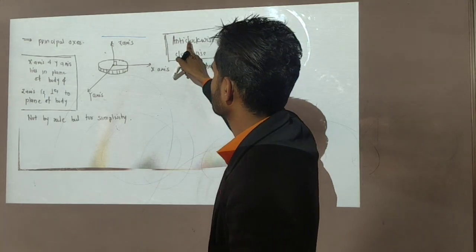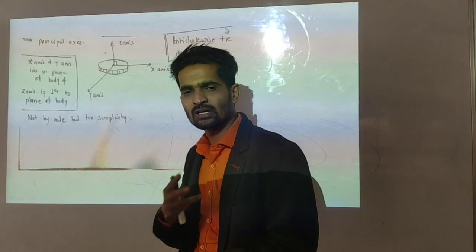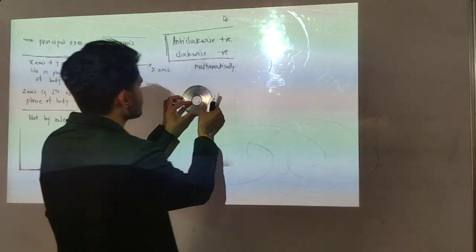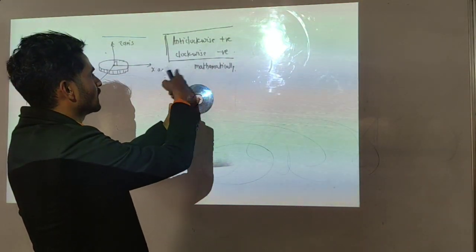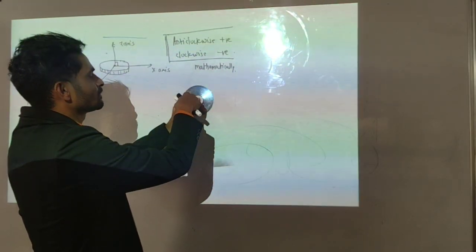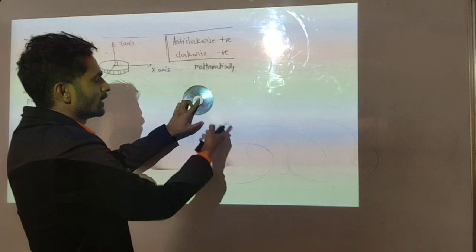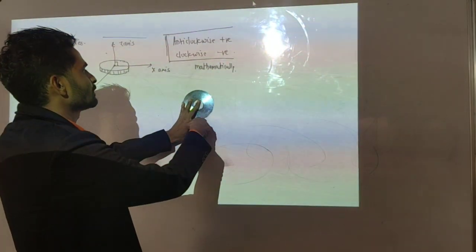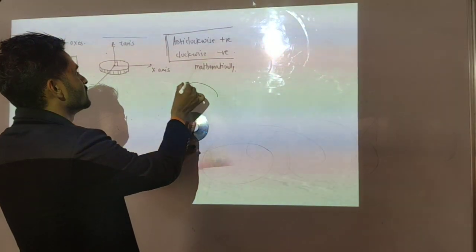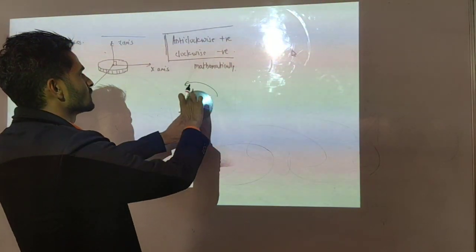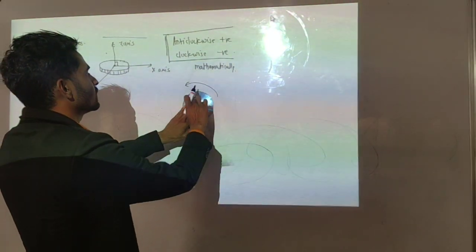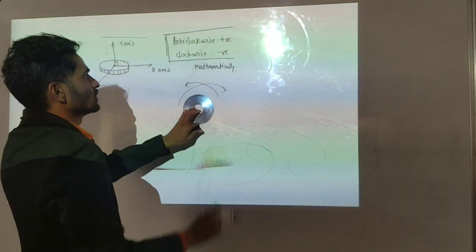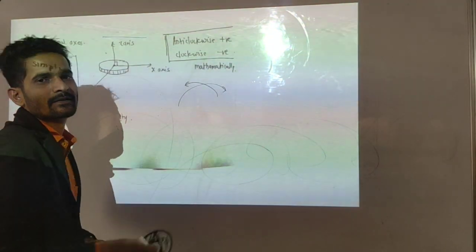Mathematically, there are two types of rotations. One is anticlockwise — this anticlockwise rotation is taken as positive mathematically. And if we rotate clockwise, this clockwise rotation is taken as negative.